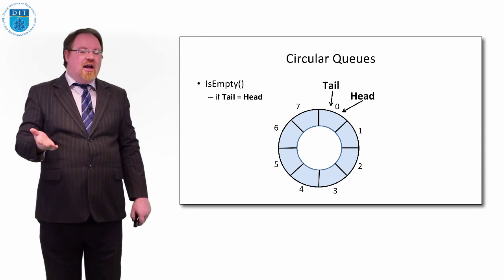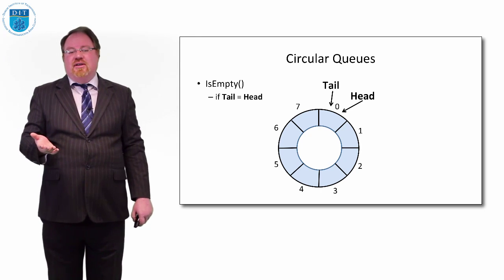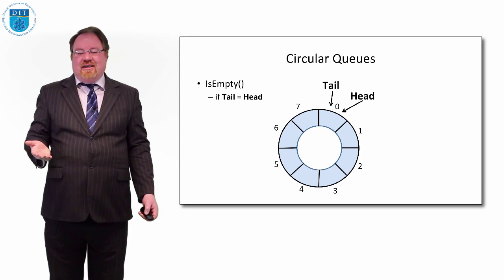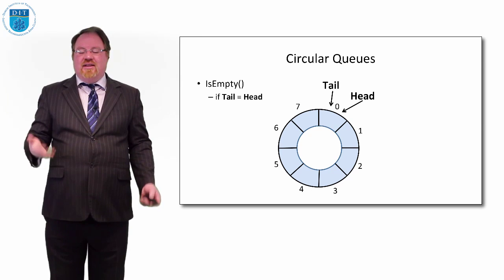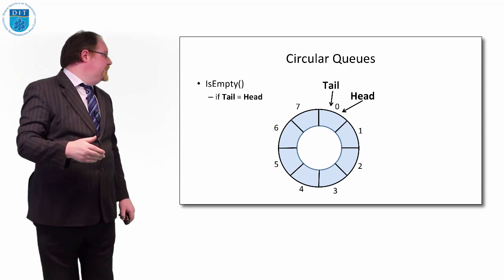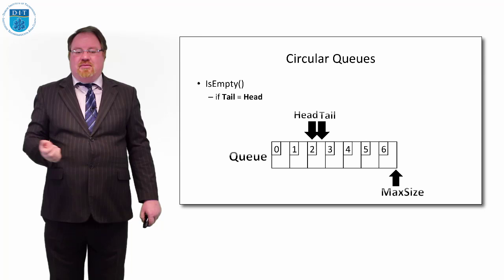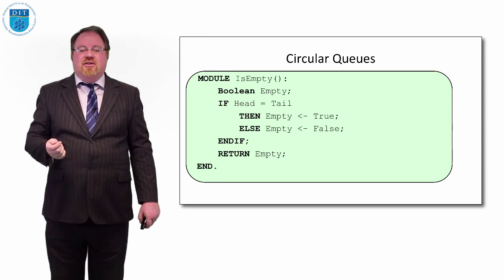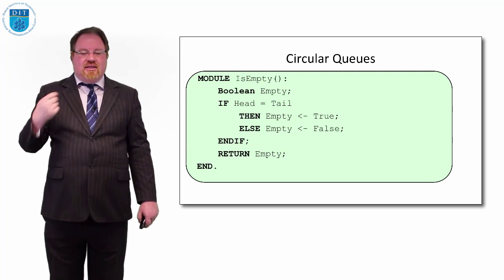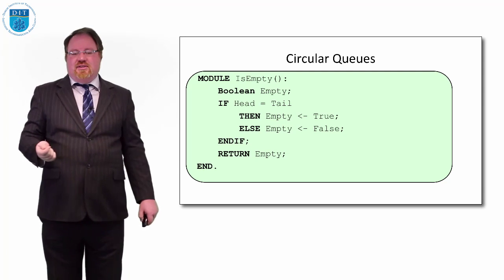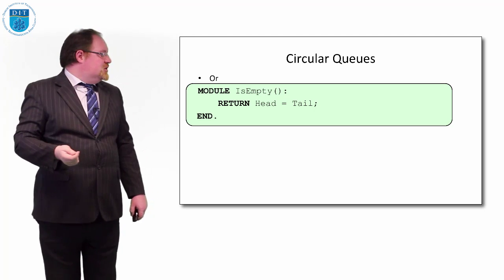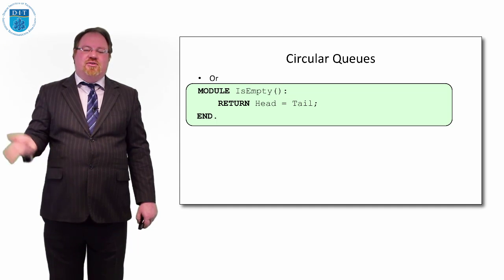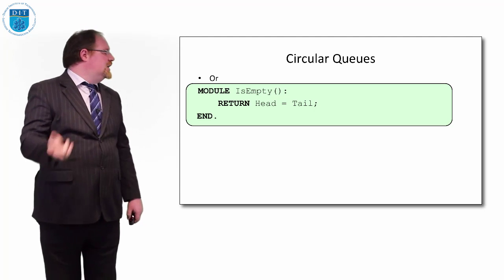How do we know a circular queue is empty? It's the same as a linear queue: if head equals tail, they're both pointing at the same value, so there are no values in the queue. We can say: if head equals tail, then empty is true, else empty is false. Or simply return whether head equals tail.